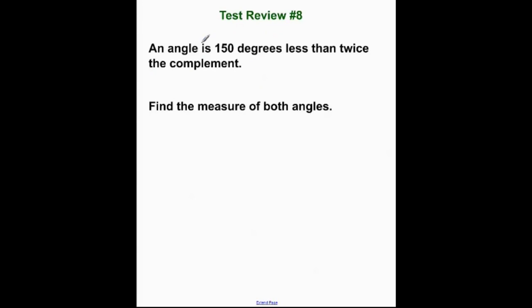Well, you automatically should think that is means equal. An angle. Well, I don't know what the angle is. In algebra, we call that x. 150 degrees less. Oh, we're going to be subtracting here. Yep. Then twice the complement. This wording is slightly different than what you're used to. And we're doing it on purpose. The complement infers that it's the complement of this angle right here. Which again is 90 minus x.